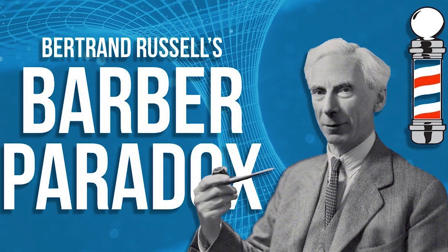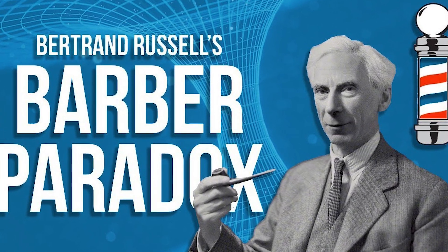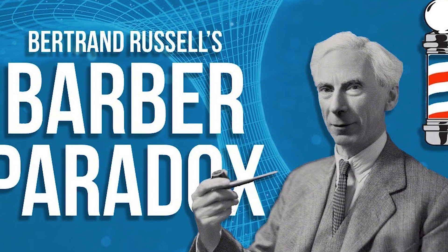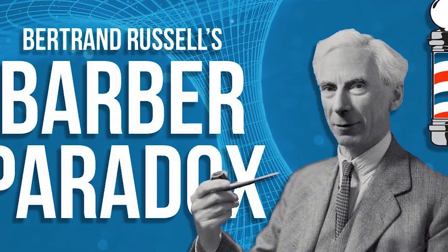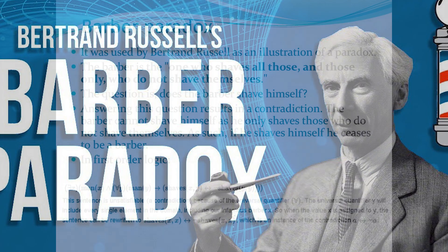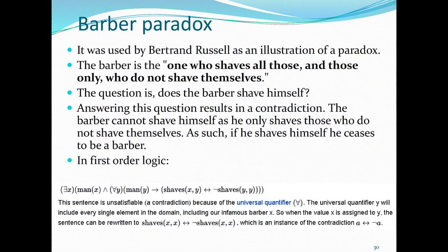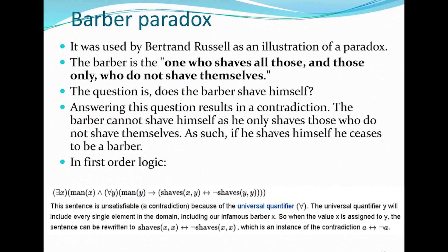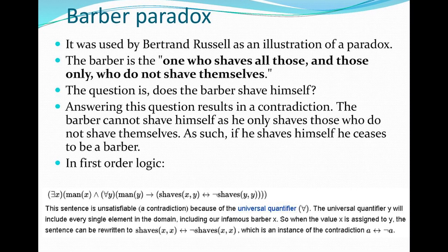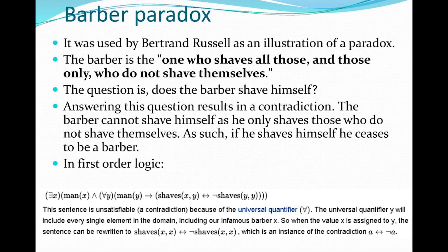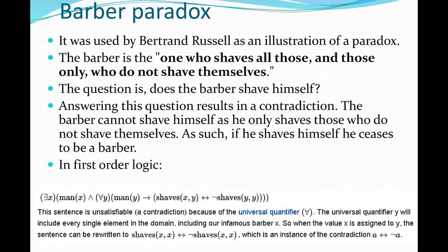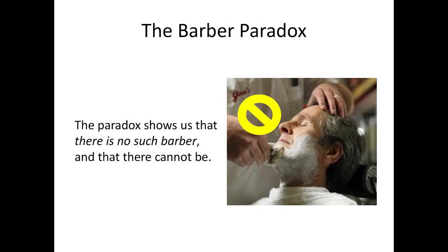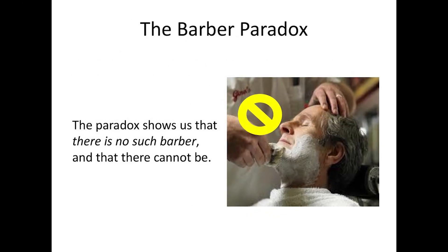This might sound like a clever joke, but the implications go far deeper. The Barber Paradox shows how self-reference within a logical system can lead to inconsistency. It illustrates the problem with certain definitions that seem innocent but collapse under scrutiny — just like Russell's Paradox destabilized early set theory by challenging the idea of the set of all sets, the Barber Paradox exposes the logical instability of self-inclusive rules.